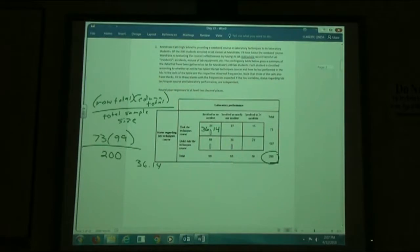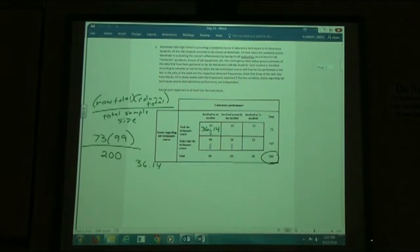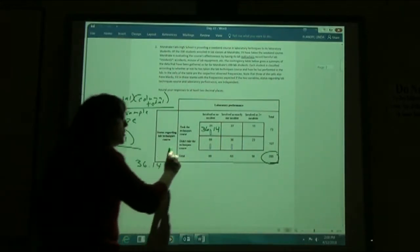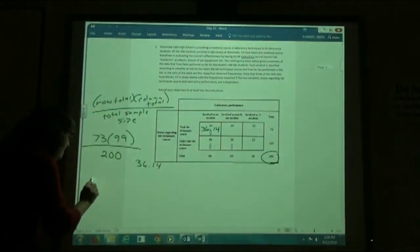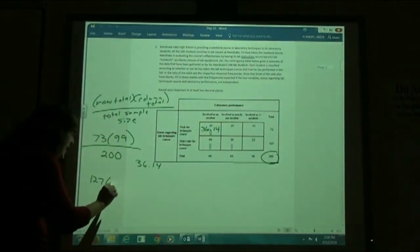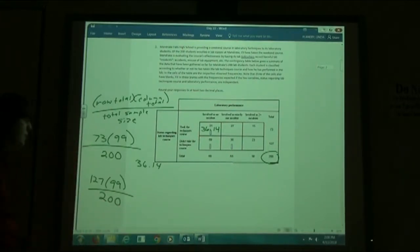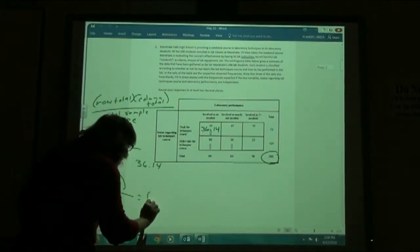On my next box, my next box is down here in my second row. So I want to take my row total, 127, times my column total, 99, divided by my sample size, which again is going to be my 200. I'm just going to grab my calculator. 127 times 99 divided by 200 should give you 62.87.